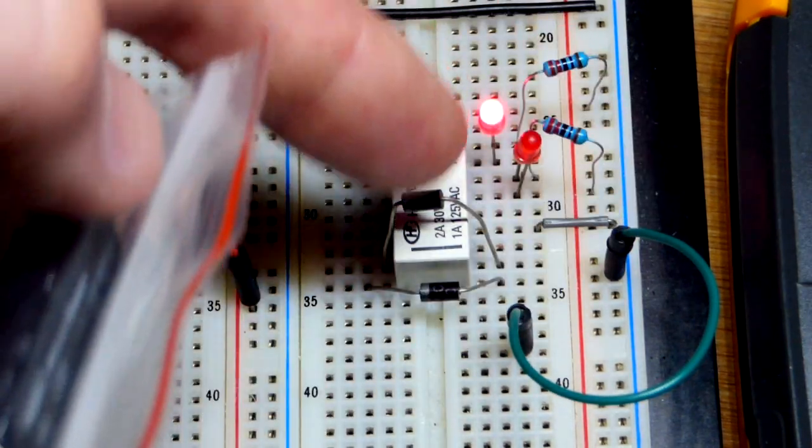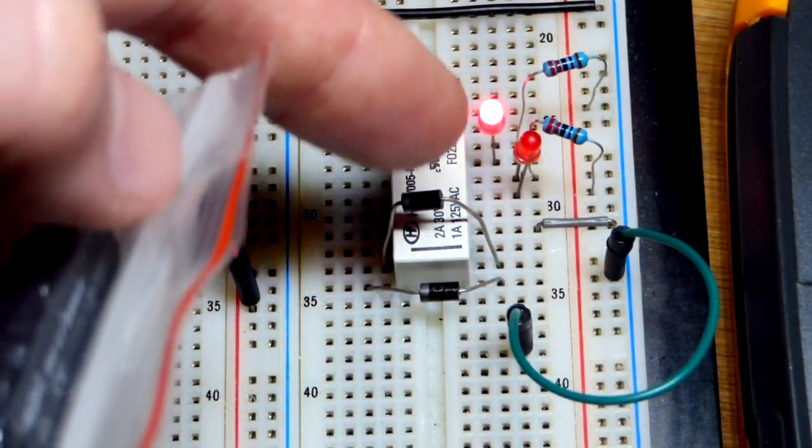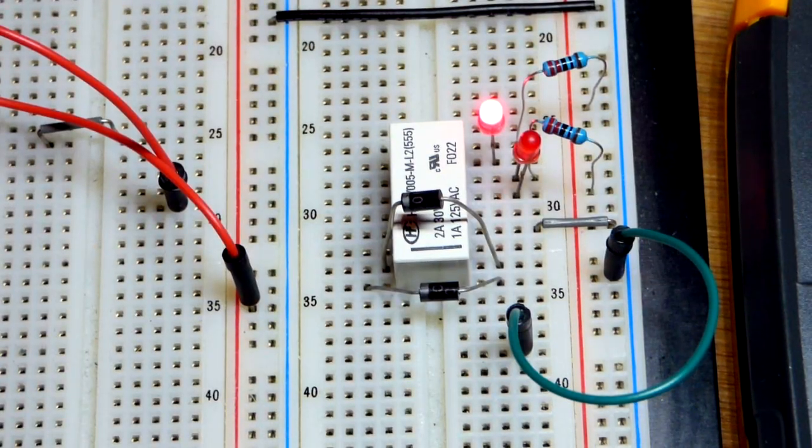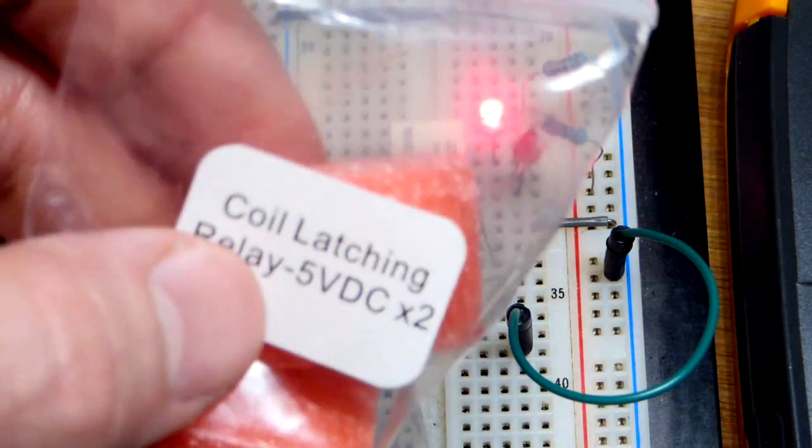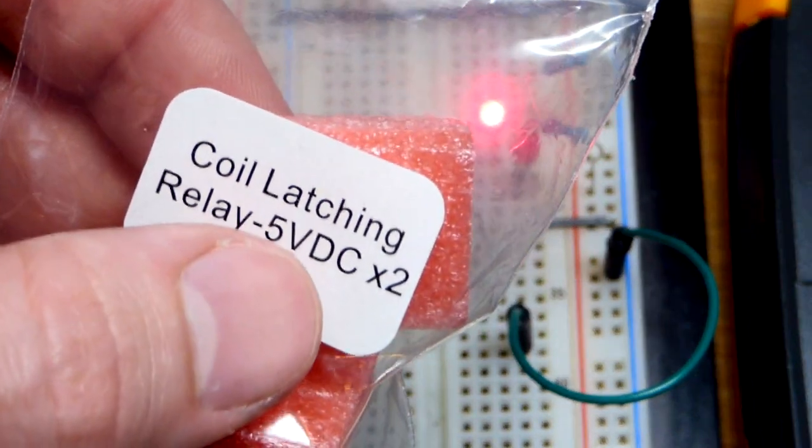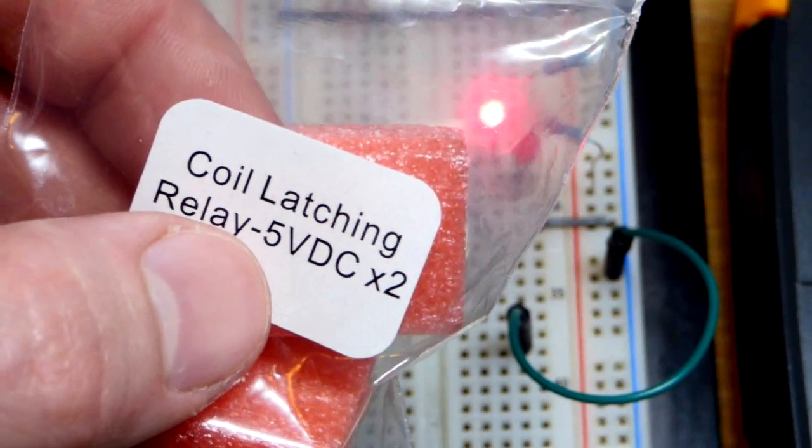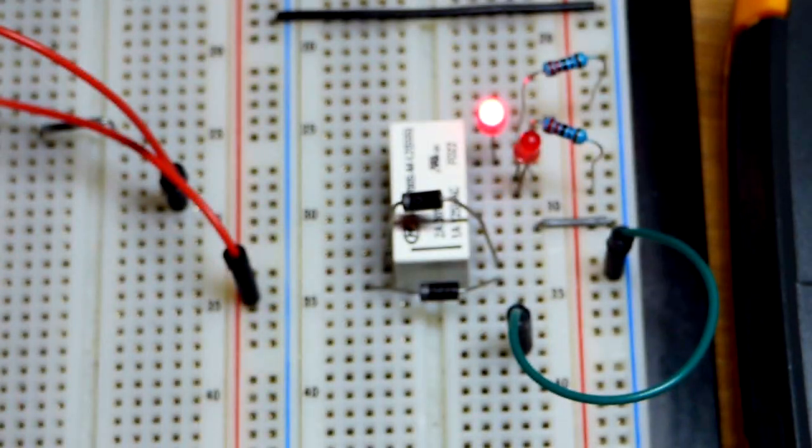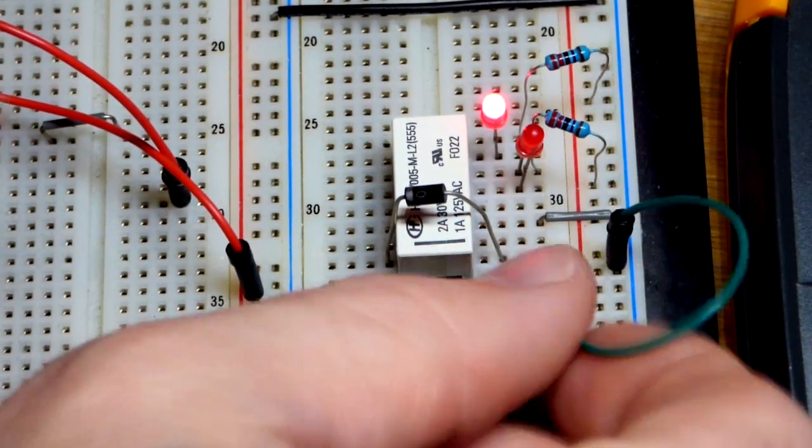When you energize it, it switches the normally open into the closed position as long as you energize it. I've been buying latching relays, but they're modules. The modules have a relay and other circuitry. It uses the circuitry to latch it, which takes energy. This one's nice, it's an actual latching relay.